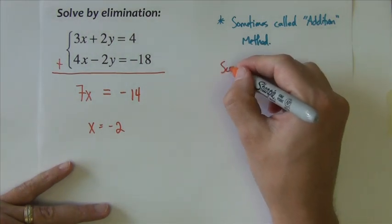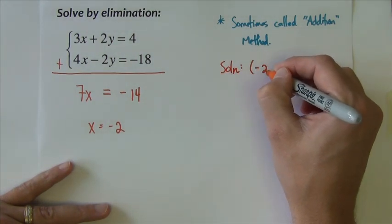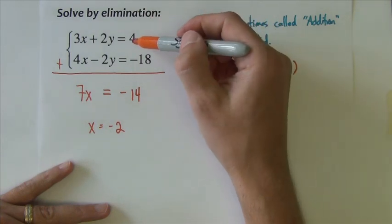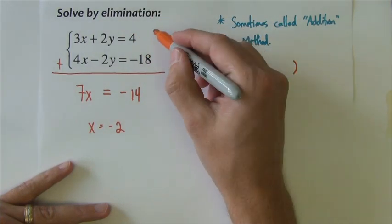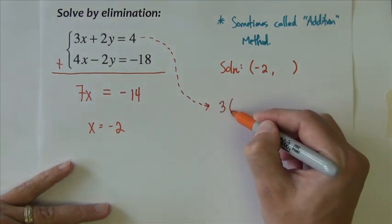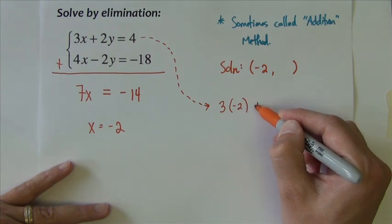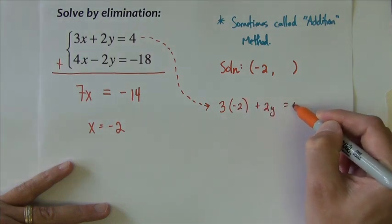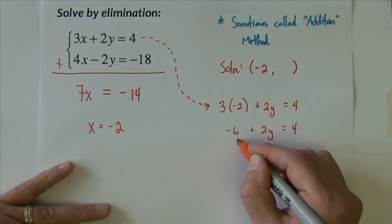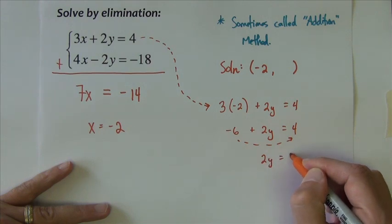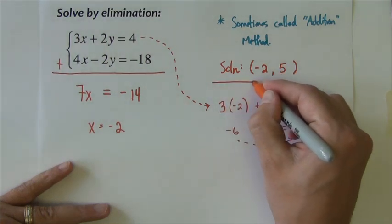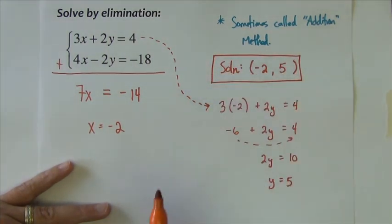The solution has to be an x comma y value. So we have the x, we need the y. At this point we pick either of these equations, it doesn't matter which one. Let's just pick the top one and put the x value that we found in for the x and solve it for the y. So we get negative 6 plus 2y equals 4. Add the 6 over, so 2y equals 10, so y equals 5. And that's finished.